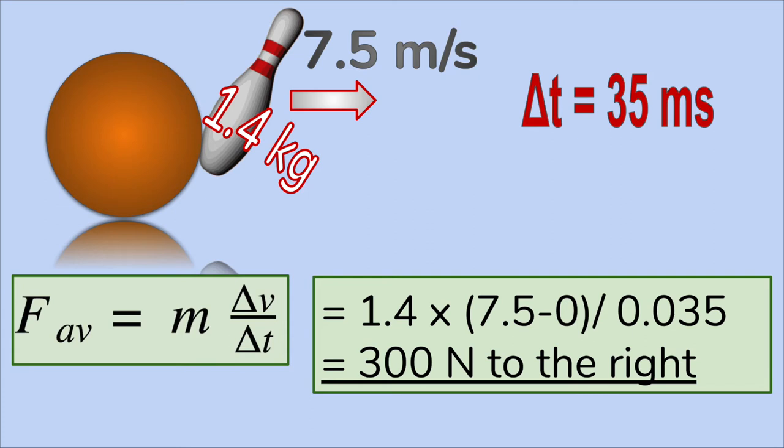We use the formula of mass multiplied by the change in velocity divided by the time they are in contact, and we find that the average force is 300 Newtons to the right. If we want to know the force the pin exerts on the ball, we can use the same method to calculate it. But there's an easier way.